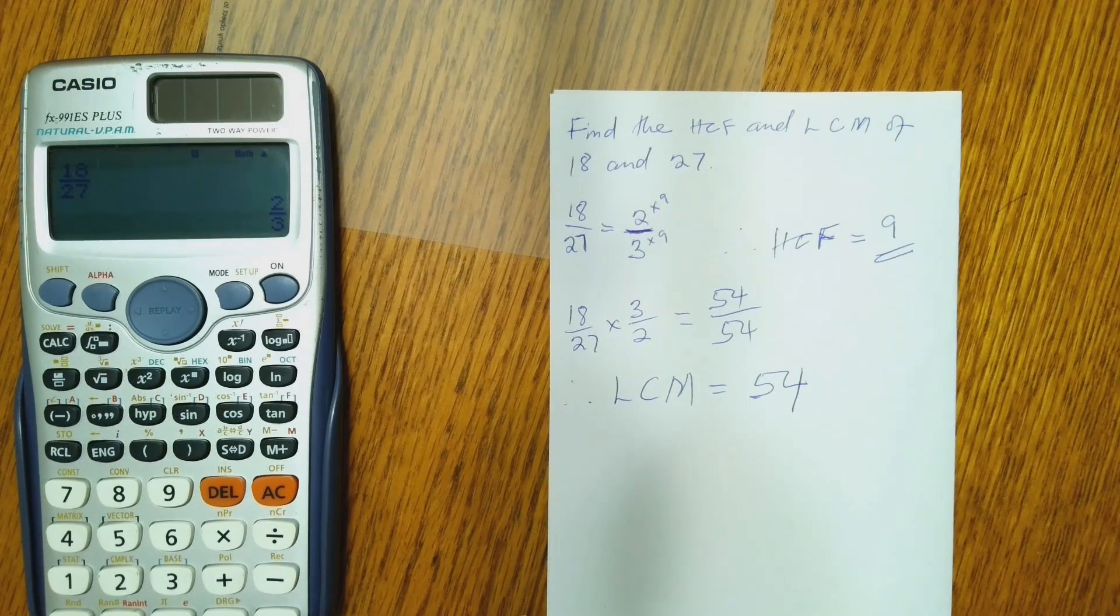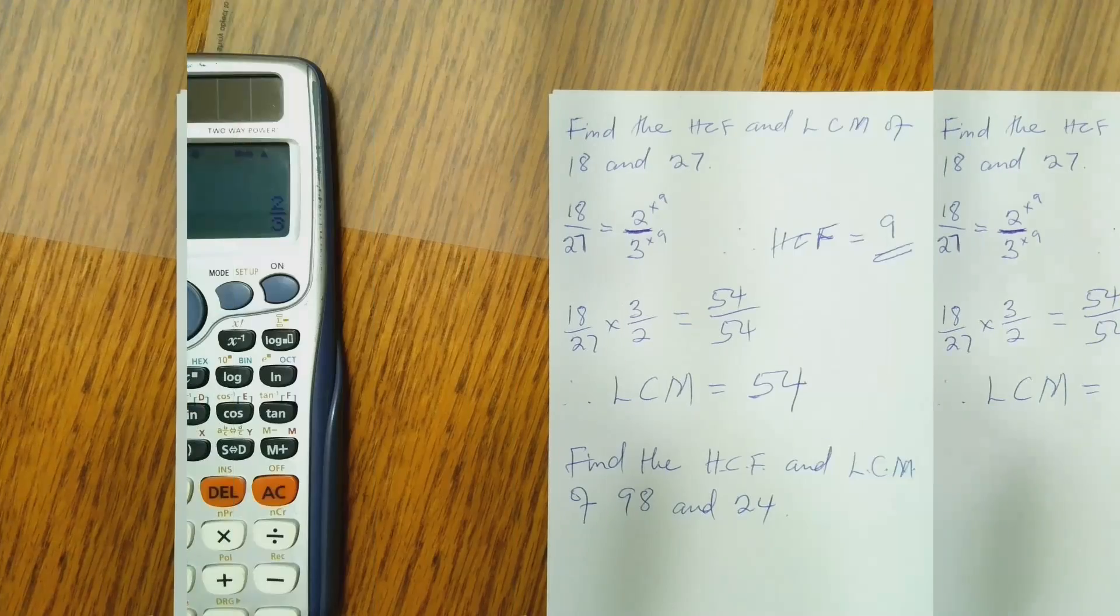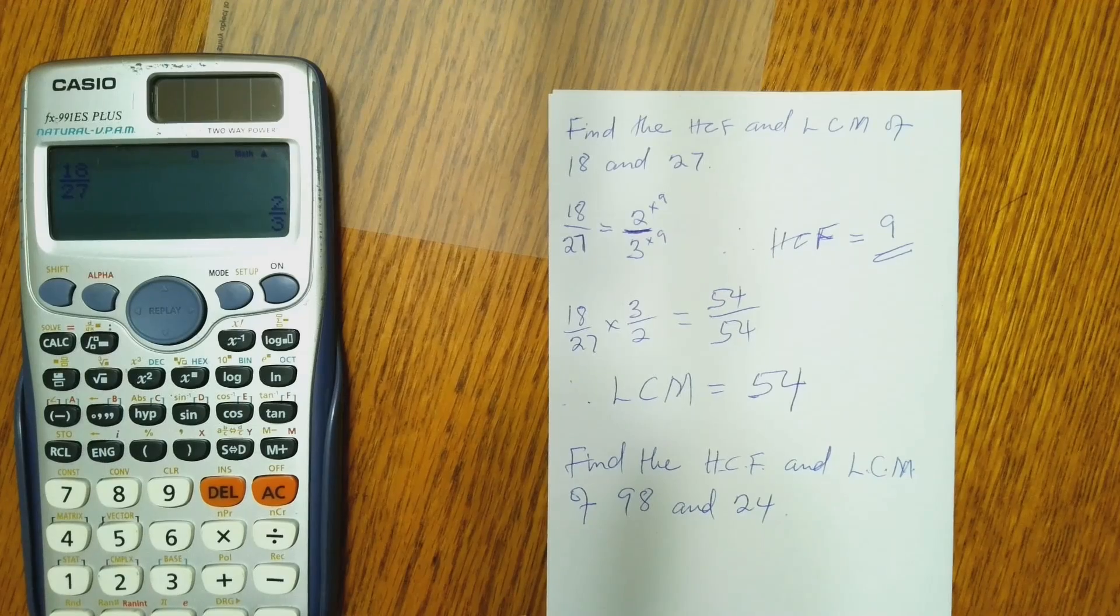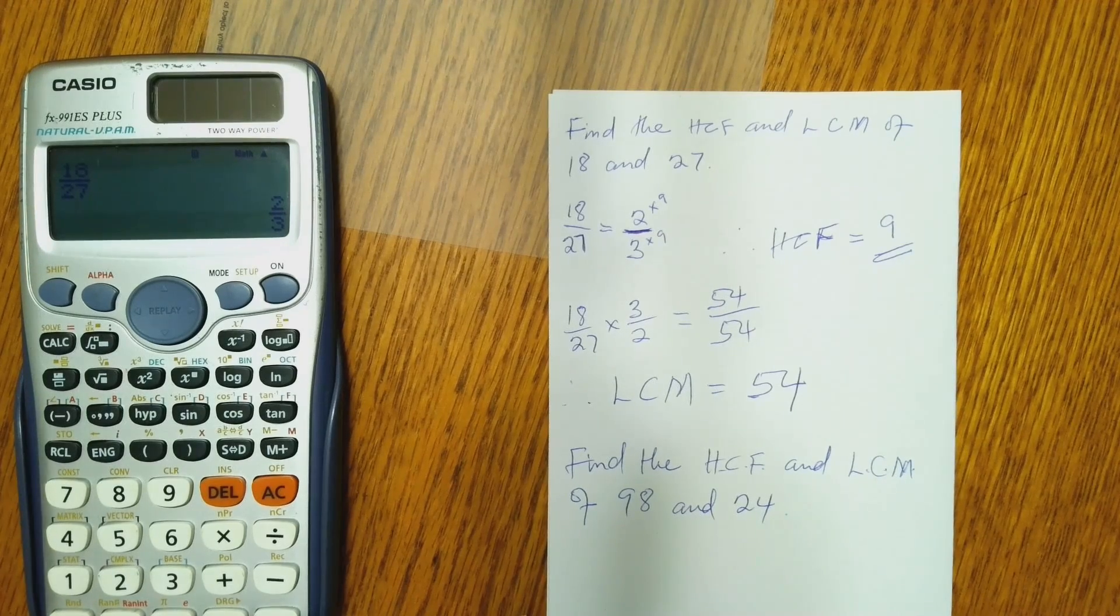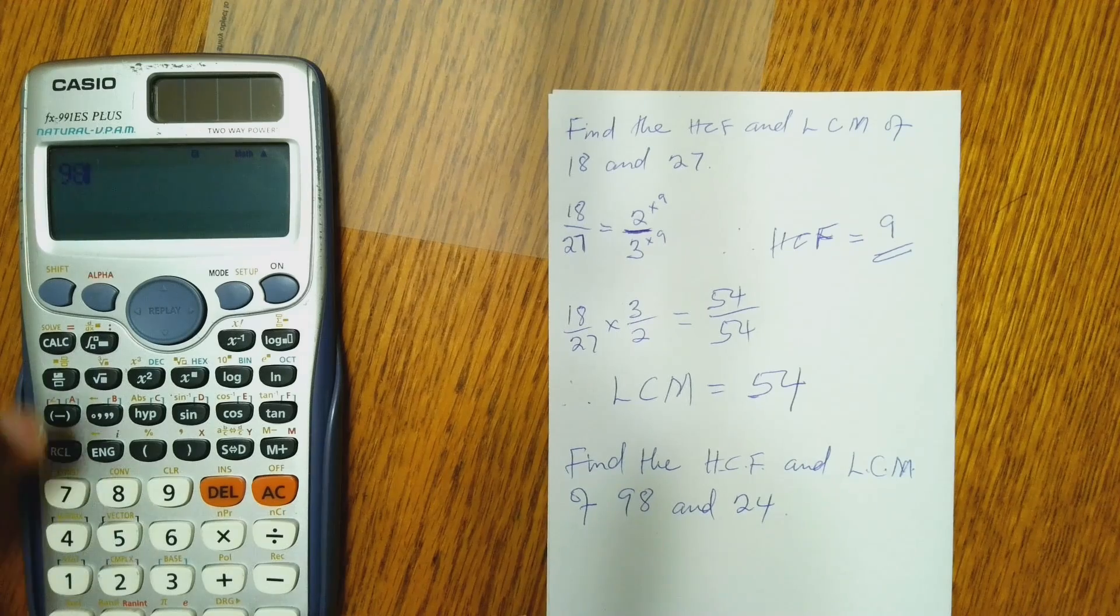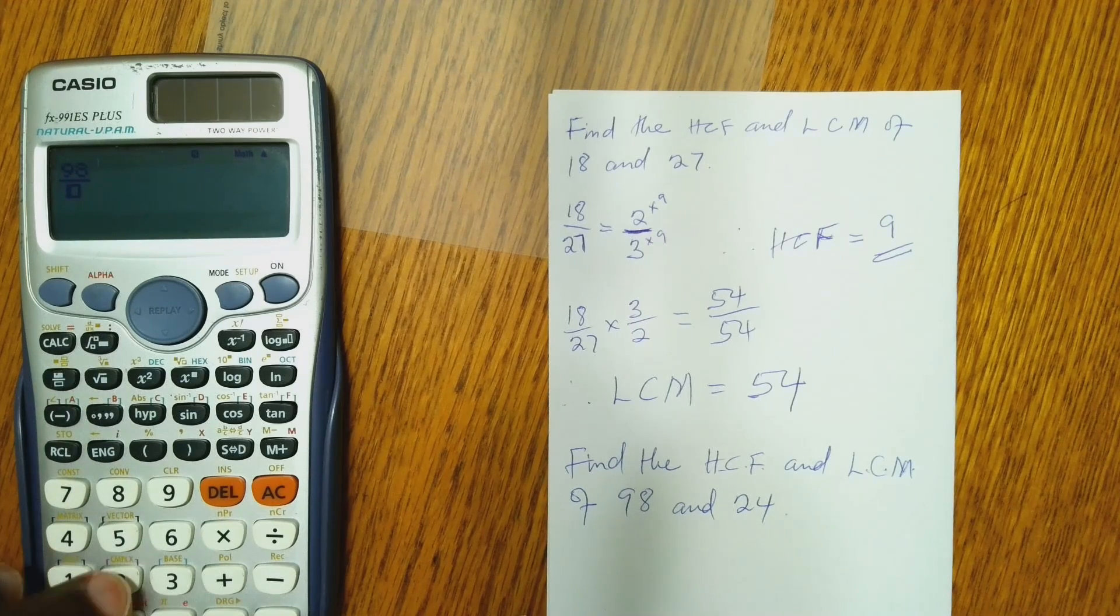So it's just as simple as that. Let's try a second one. So now we have to find the HCF and LCM of 98 and 24. So we do the same thing again. We express 98 and 24 as a fraction. So 98 divided by 24.